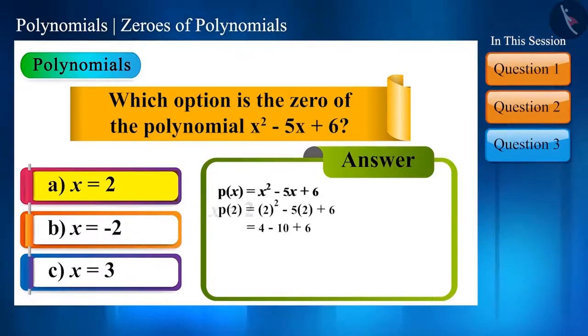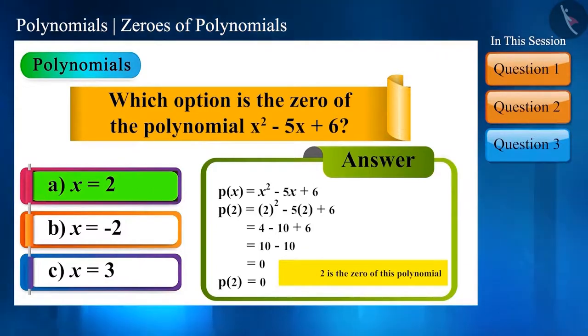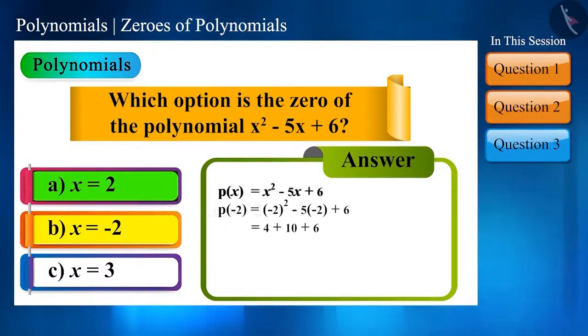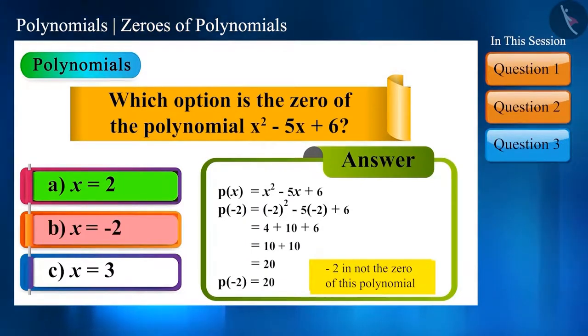In the same way, the value of polynomial with x is equal to minus 2 is 20. It means that minus 2 is not the zero of this polynomial.